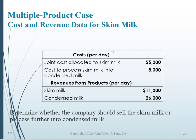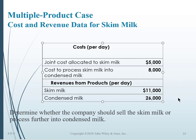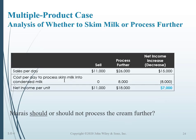What about the skim milk example? The joint cost of skim milk is $5,000, and the cost of processing into condensed milk is $8,000. Skim milk by itself earns $11,000 in revenue, while condensed milk earns $6,000 more — a sales increase of $15,000. But there's an increase in cost of $8,000. The net effect is a gain of $7,000 in income, so we should further process the skim milk into condensed milk. Those are just a couple of techniques and questions we can answer with incremental analysis.